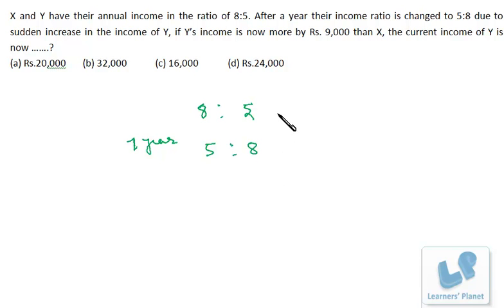Now we don't require this data because the difference of X and Y is already given as 9,000. Now 5 and 8, that is 3 parts. 3 parts is equal to 9,000, right?